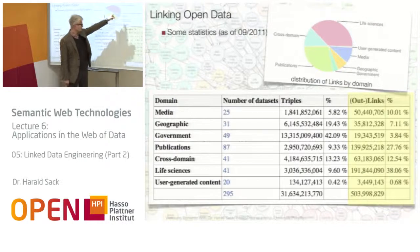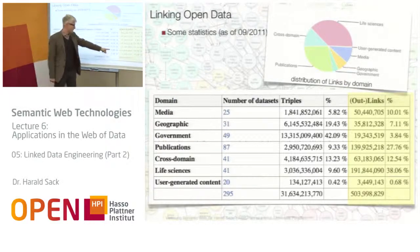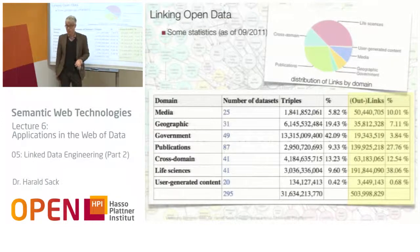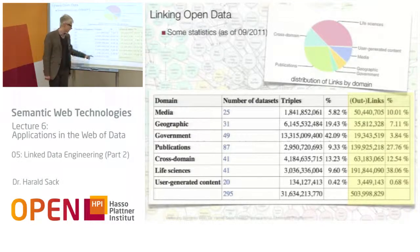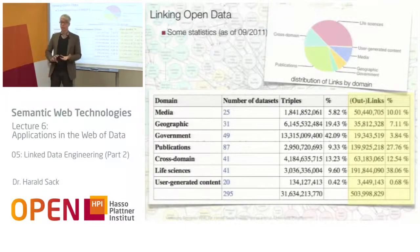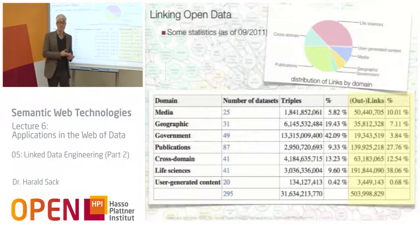Life sciences, with 10% of the triples, has almost 40% of the links — so it's vice versa. Comparing the overall numbers, we have 31 billion triples but only 500 million links. The data could clearly be better connected. Therefore, it is rather valuable and important when you include new data to also establish links to already existing data, because only then you can make full use of it.